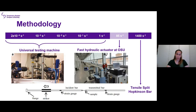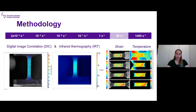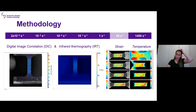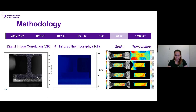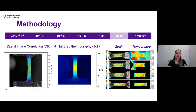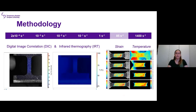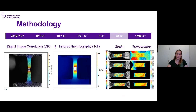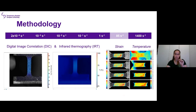Several testing devices were required, classified into three main categories: the universal testing machine, the fast hydraulic actuator from the Ohio State University, and finally the tensile split Hopkinson bar. During the mechanical tests, optical and infrared high-speed photography was used to characterize both strain and temperature. The combination of these techniques provides very meaningful information about material behavior at high strain rates — for example, we can see how strain localizes along the gauge length while temperature increases significantly in the same spots.